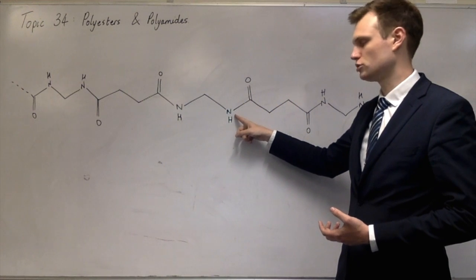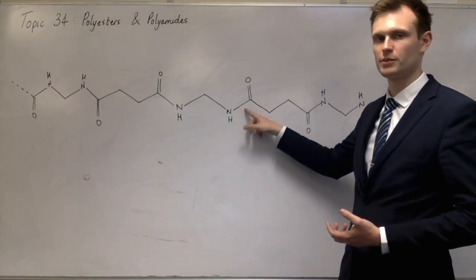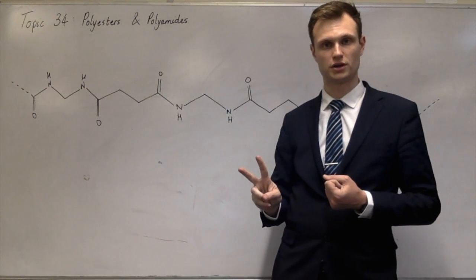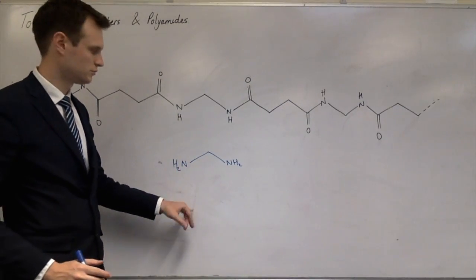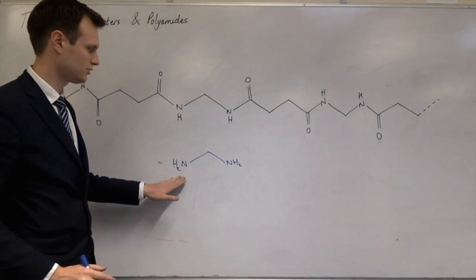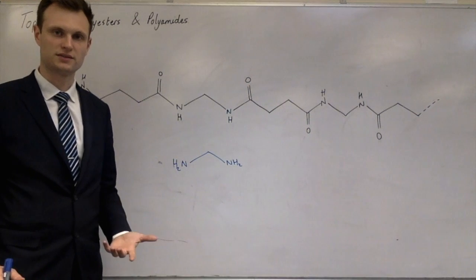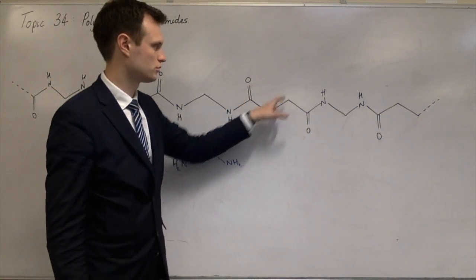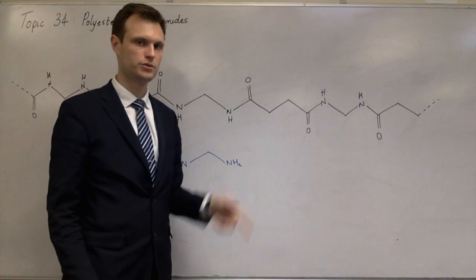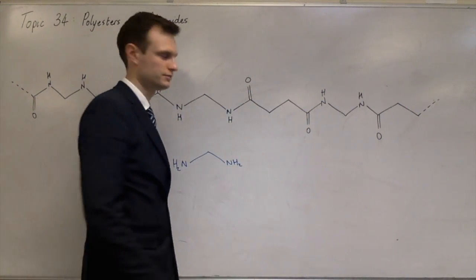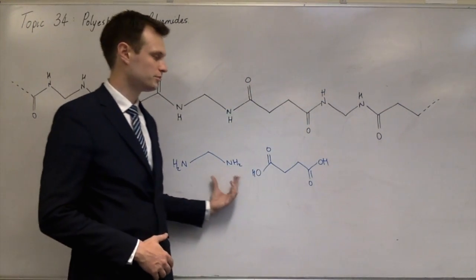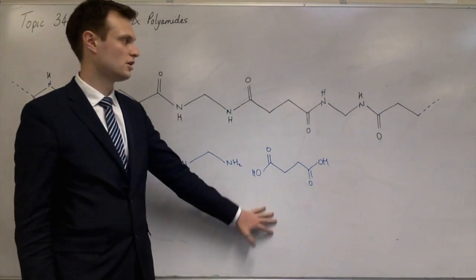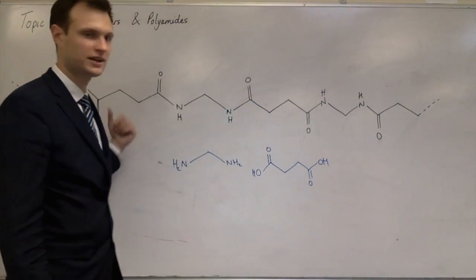You end up with NH2 there and a carboxylic acid. If you do that for all the amide bonds, you end up with just two products: this one with two amines on either side and the carbon chain in the middle, and then with the acid — one, two, three, four carbons — so butanedioic acid. You probably won't be asked to name these, but draw them and state that these are the two monomers which would produce this condensation polymer.